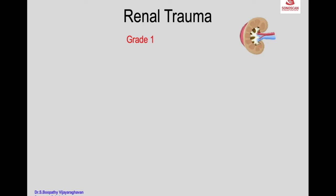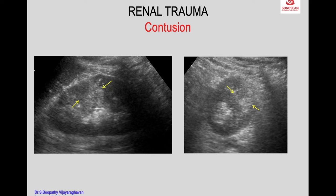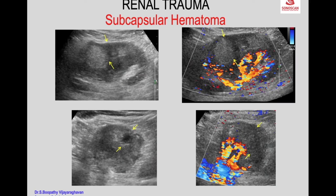Grade 1 includes renal contusion with a mass effect, also seen as less echogenic in 20 to 30% of cases, and without a mass effect. With a history of trauma, this indicates a renal perinephric hematoma. Color Doppler is useful to see the compression of the renal parenchyma on the outline of the renal parenchyma.